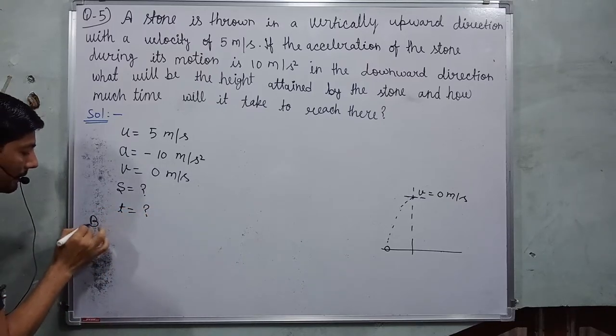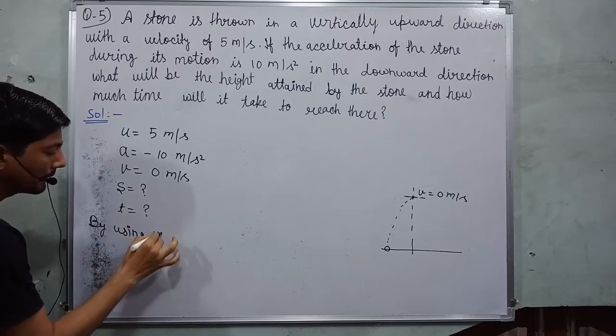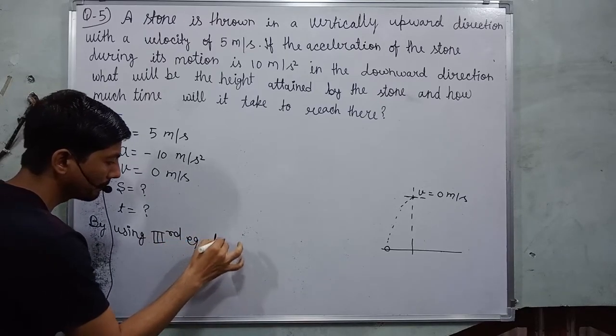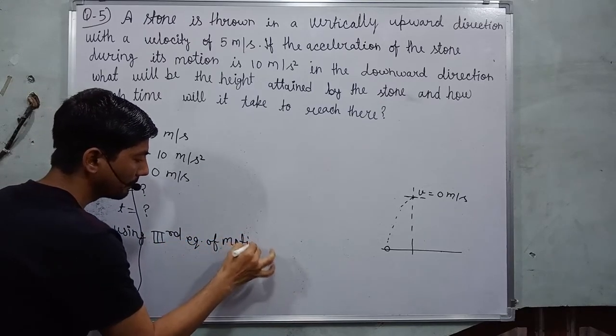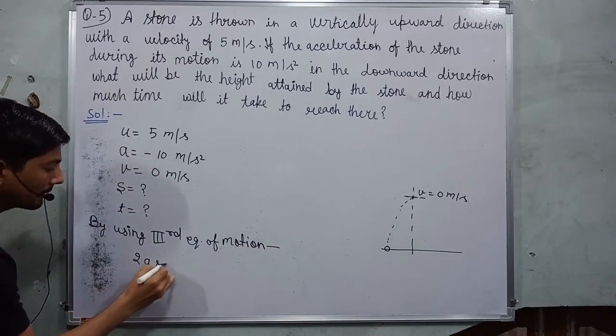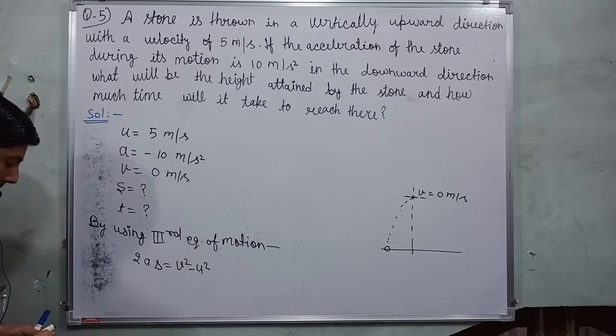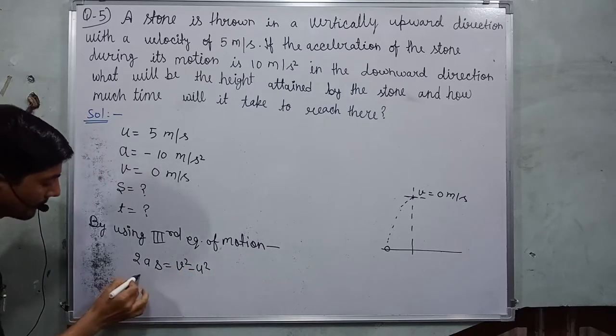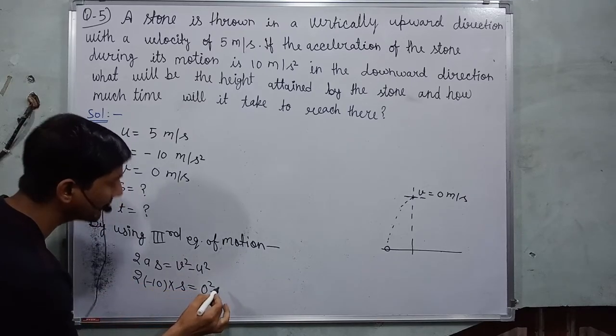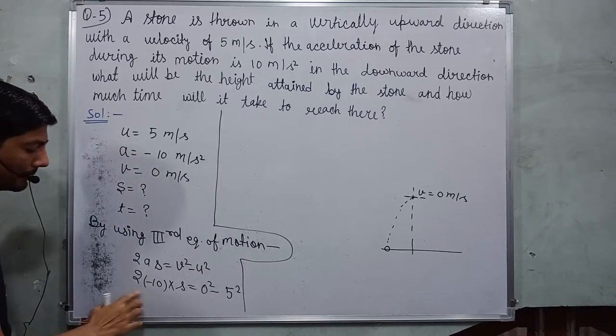By using third equation of motion, which is 2as is equal to v square minus u square. Substituting the values, we find 2 into minus 10 into s is equal to 0 square minus 5 square.